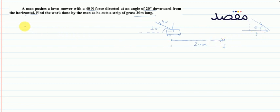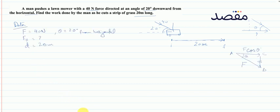Data लिखते हैं — Force = 40 newton। Force की direction 20 degrees from the horizontal downwards है।